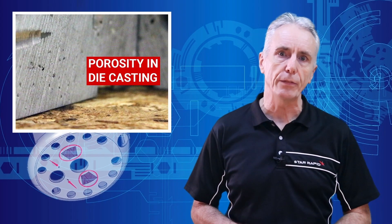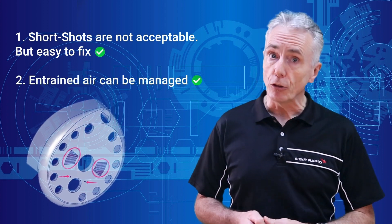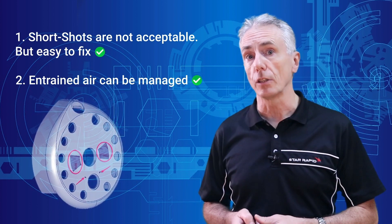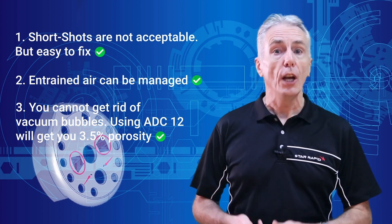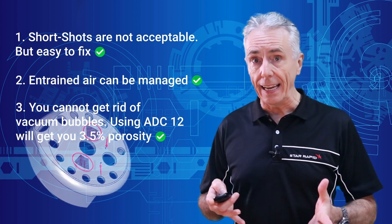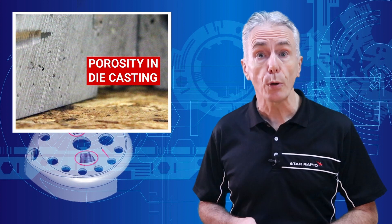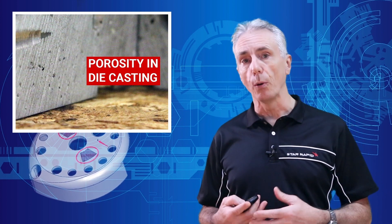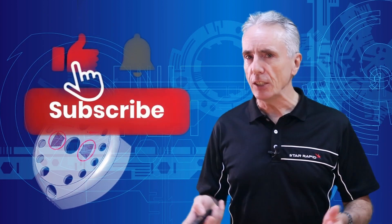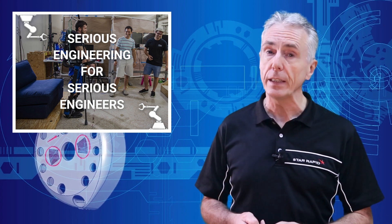So there we have it. The big takeaways from this video are: number one, short shots are definitely not acceptable and relatively easy to fix. Number two, entrained air can be managed and if not completely avoided, you can aim to get the entrained air into areas of the casting where the structural integrity is not a problem. And number three, you cannot completely get rid of vacuum bubbles if you want strong castings, but if you use ADC12 aka A383, the very best you can ask for is about 3.5% porosity by volume. If you're experiencing problems with your pressure die casting development, don't forget that we're here to support you, so drop us a line. Don't forget to subscribe, share the engineering love, and we're the people that do serious engineering for serious engineers.